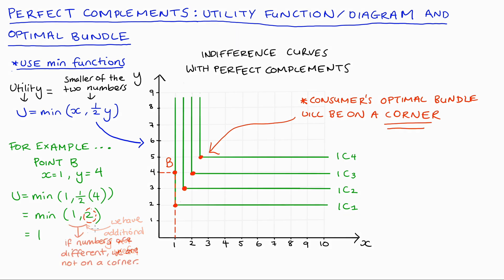So in general then if the numbers in our function once we substitute how many x we have and how many y we have, if they end up different, that's basically telling us that we have an extra of one of our goods that is not contributing to our consumer's utility. We're basically on that vertical section of our indifference curve or the horizontal section of our indifference curve. We are not squarely on the corner. And so we can conclude then that when our numbers in our min function are exactly equal to one another, it's at this point that actually corresponds to our corner points on our indifference curves. And that's exactly what we need for our optimal bundle.